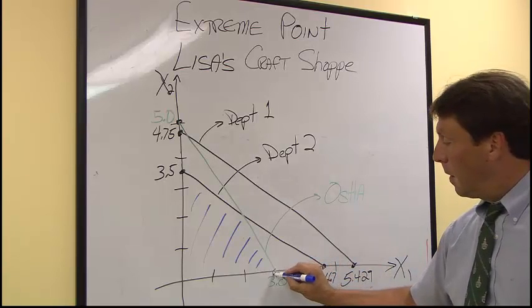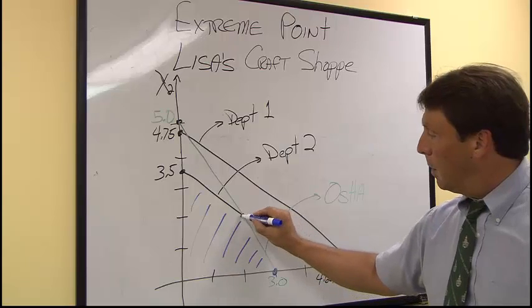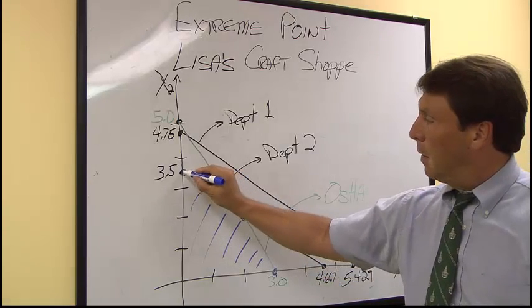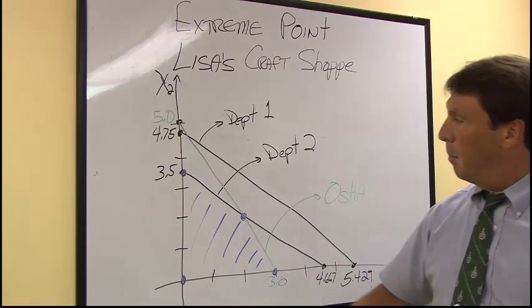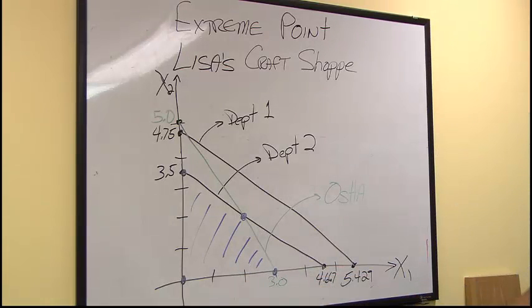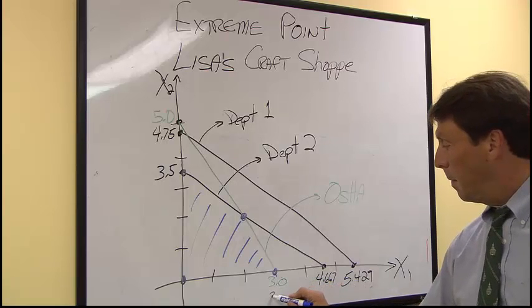The extreme point theorem says that our optimal solution will be at one of, in this case, four corner points. There is a special case where, if it's equal to the line, it could be on the line.